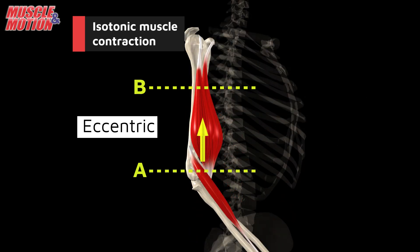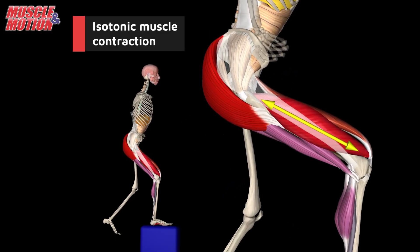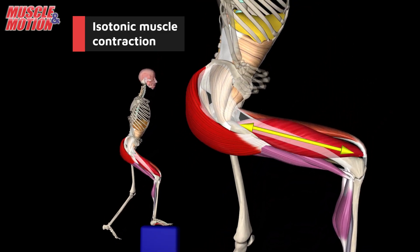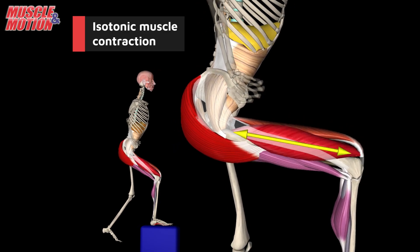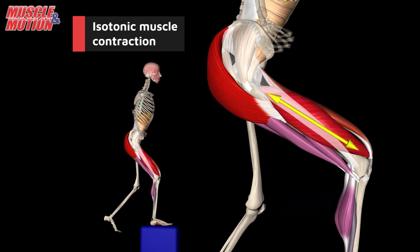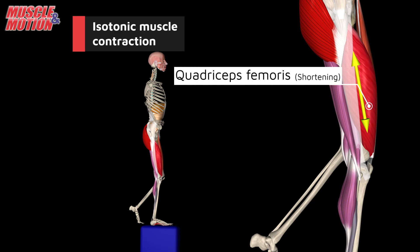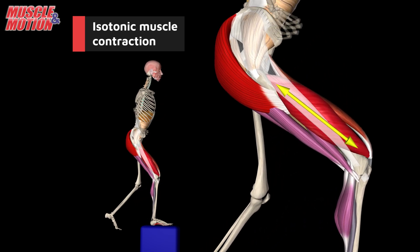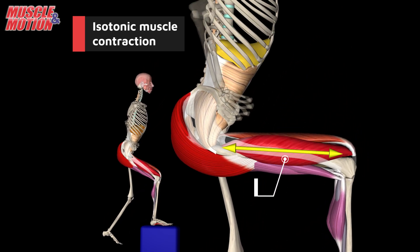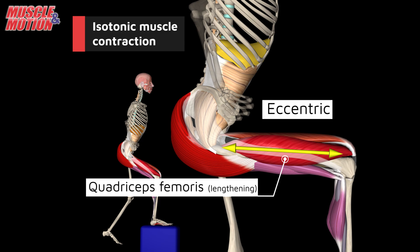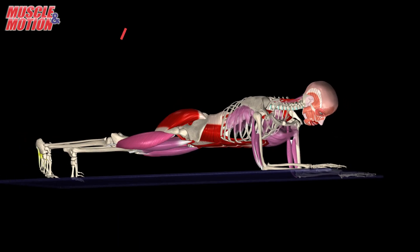We can see another example of these two contraction types in the quadriceps muscle when performing the box step-up. When stepping up on the box, the quadriceps shorten under load — concentric contraction. When stepping back to the starting position, the quadriceps lengthen under load — eccentric contraction — which also helps to restrain the body weight and prevent falling.